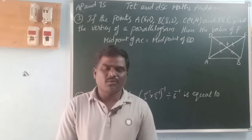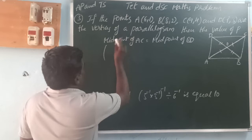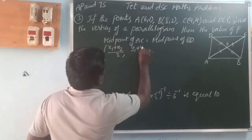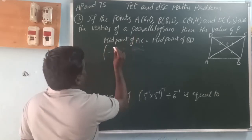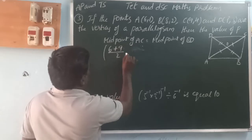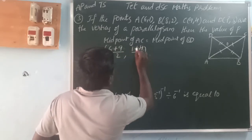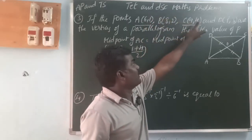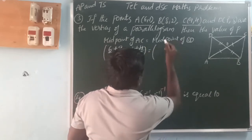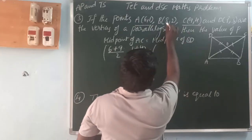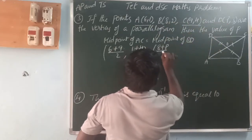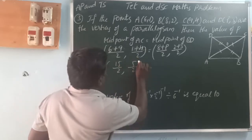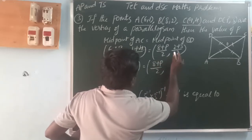The midpoint formula is (x1 plus x2) by 2, (y1 plus y2) by 2. For diagonal AC: x1 is 6, x2 is 9, y1 is 1, y2 is 4. So midpoint of AC is (6 plus 9) by 2, (1 plus 4) by 2, which is 15 by 2 and 5 by 2. For diagonal BD: x1 is 8, x2 is P, y1 is 2, y2 is 3. Midpoint of BD is (8 plus P) by 2, (2 plus 3) by 2, which is (8 plus P) by 2 and 5 by 2.